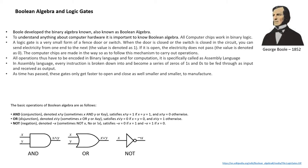A logic gate is a very small form of a fence door or a switch. When the door is closed or the switch is closed in the circuit, you can send electricity from one end to the next and the value is denoted as 1. If it is open, the electricity does not pass and the value is denoted as 0. The computer chips are made in such a way so as to follow this mechanism to carry out the operations. All operations thus have to be encoded in binary language, and for computation it is specifically called assembly language.